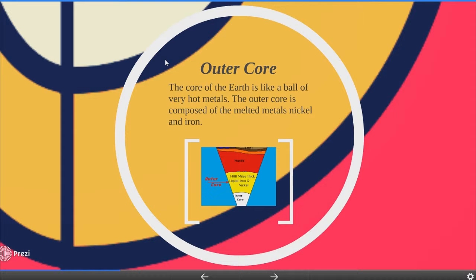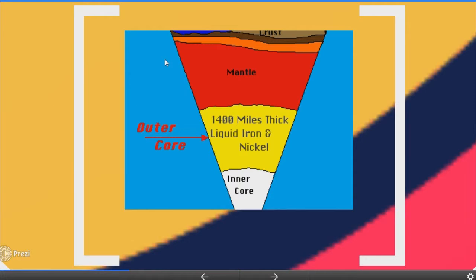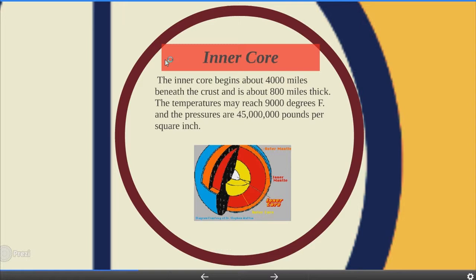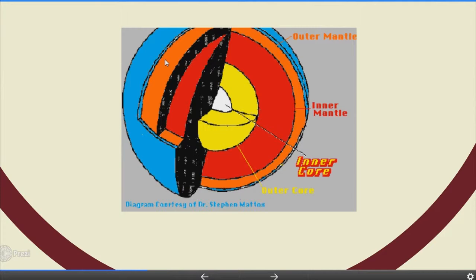Outer core. The core of the earth is like a ball of very hot metal. The outer core is composed of melted metals, nickel and iron. Inner core. The inner core begins about 4000 miles beneath the crust and is about 800 miles thick. The temperature may reach 9000–10000 degrees Fahrenheit and the pressure is 45 million pounds per square inch.